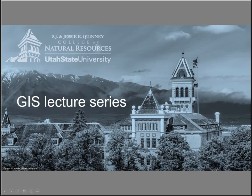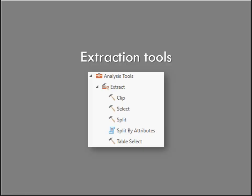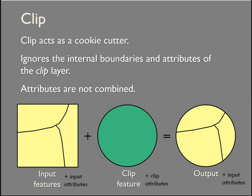Okay, part two of our geoprocessing discussion, getting into some extraction tools. Having thought about it, I guess it makes sense that the clip feature is more of an extraction. It's just too bad because it's so similar to an erase — it's silly that they're in different places. But the clip is a cookie cutter, so you are extracting information instead of getting rid of information.